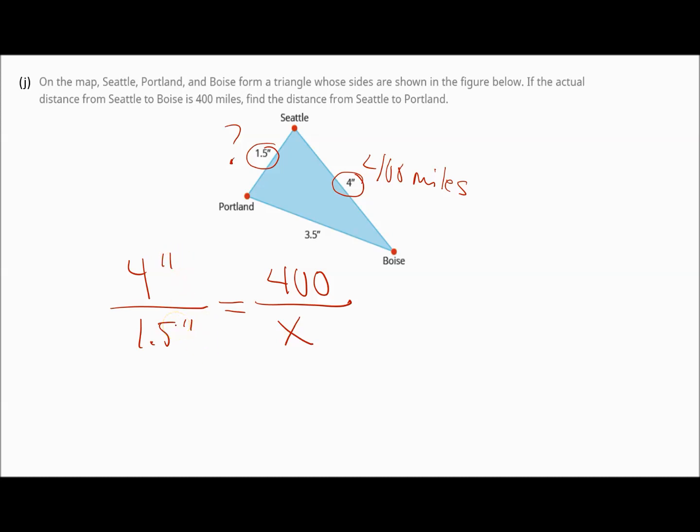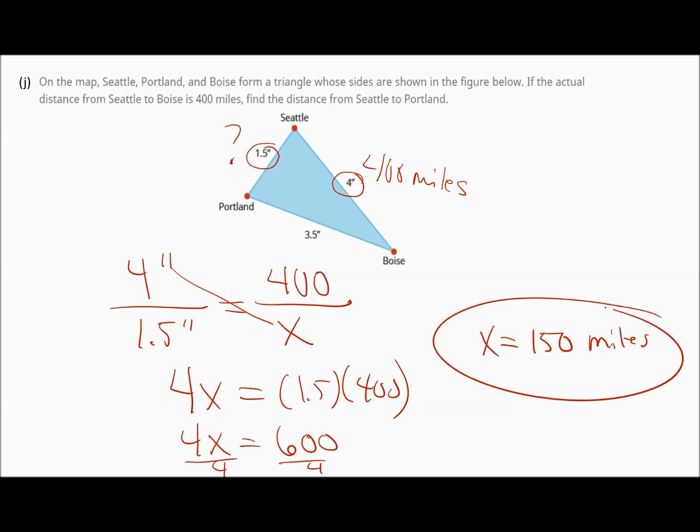Now the inches units, we can just leave alone and we can cross multiply. 4 times x is 4x times 1.5 times 400. And if you multiply 1.5 times 400 in your calculator, you should get 600. Then divide both sides by 4. So x equals 600 divided by 4, and that gives me a value of 150. Now again, always look for units on these. 150 what? Well, we're looking at miles. Since the original distance was 400 miles between Seattle and Boise, then we're talking about miles. So the distance is 150 miles.